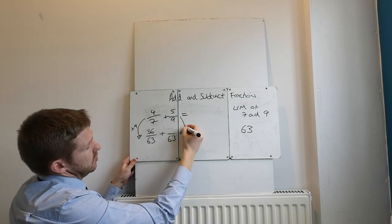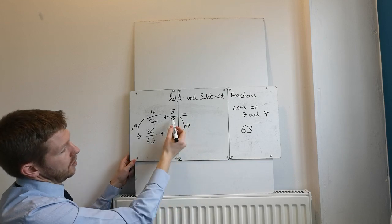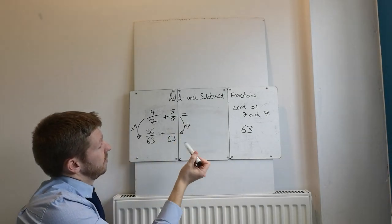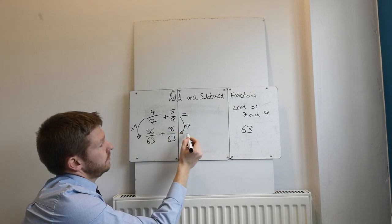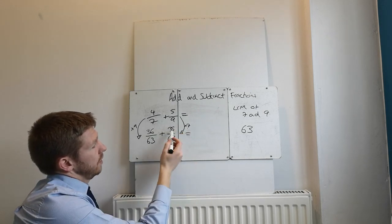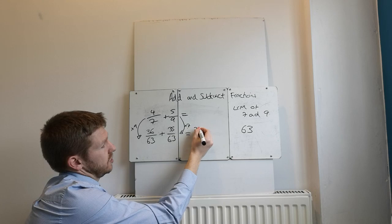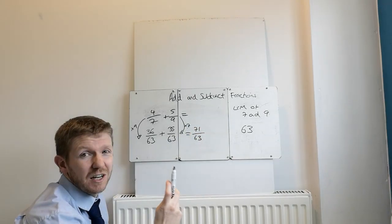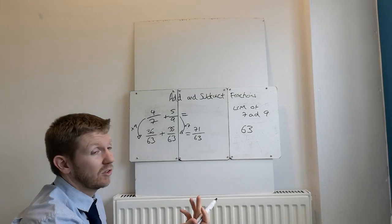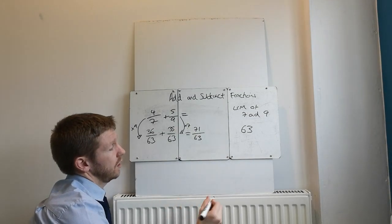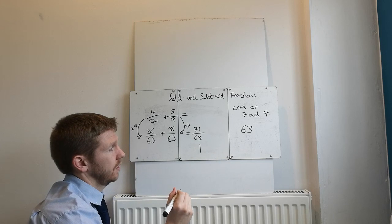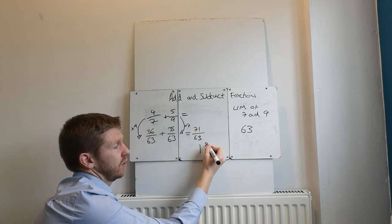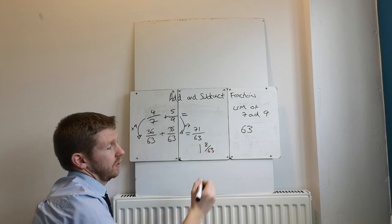This one, we've multiplied by 7. The 9 times 7 to get to 63. So 5 times 7, 35. Add the two together. 35 with 36 is 71 out of 63. Again, we don't really like to leave a fraction like that. Generally we'll say leave it as a mixed number. How many 63's go into 71? 1 does. 1 63 goes into 71. And then you'd have 8 left over. So it's 1 and 8 over 63.